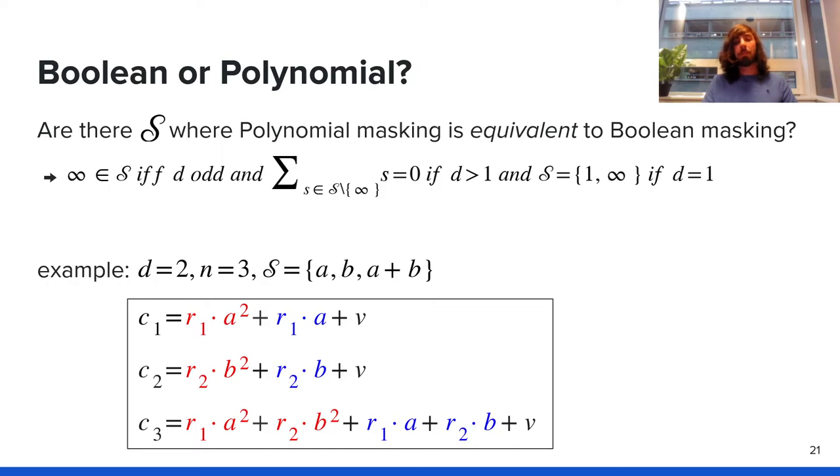We can answer positively. There are some sets of points where polynomial masking is equivalent to Boolean masking. The example I would give you is for parameters d equals 2 and n equals 3, minimal amount of shares to reconstruct is 3. The set of points a, b, and a plus b, with a and b distinct. If you compute the shares c1, c2, and c3, you can see that if you were to sum them together, and again by summing I mean bitwise XOR, all the terms would cancel out except for v. So from the shares of this set of points, we can reconstruct our secret just by summing it together, which is exactly Boolean masking. We did some hamming weight experiments to confirm that the result from those shares is exactly the same as Boolean masking.